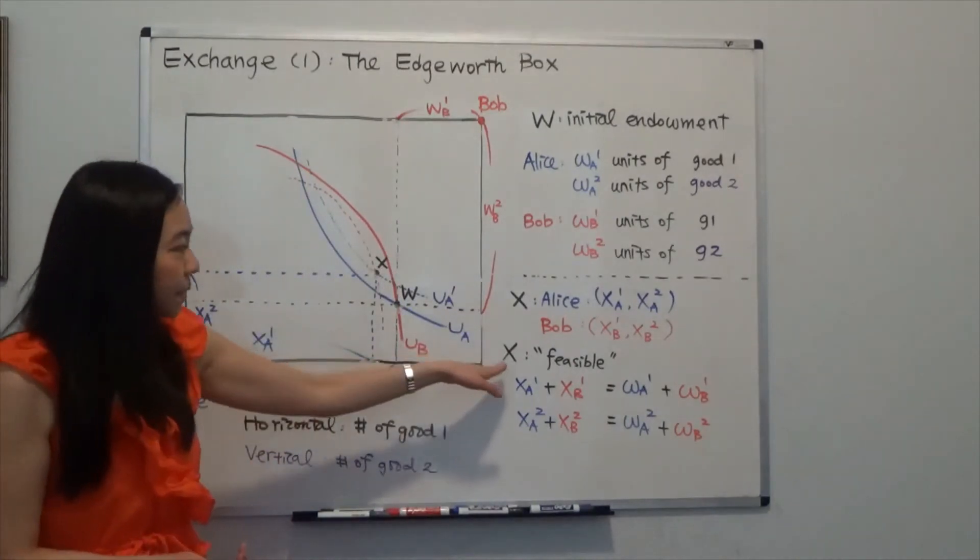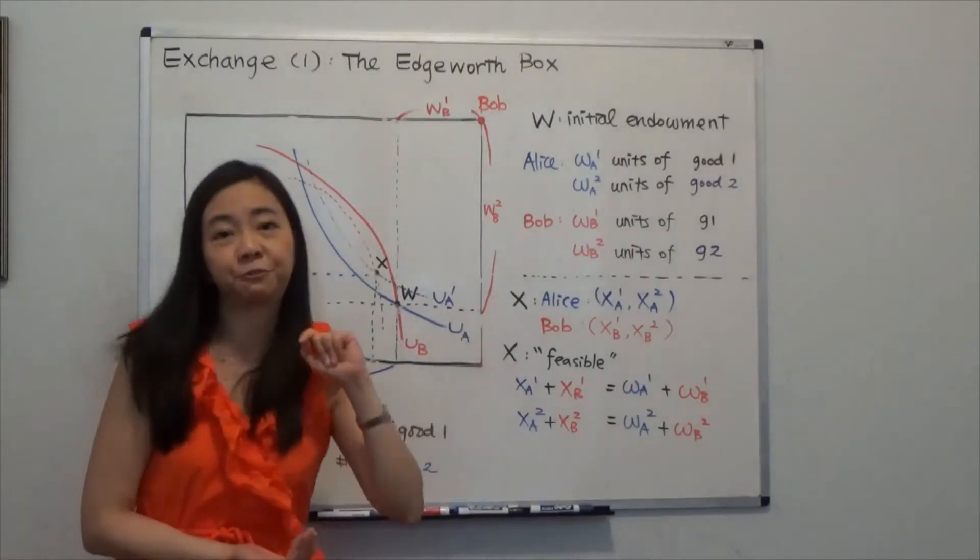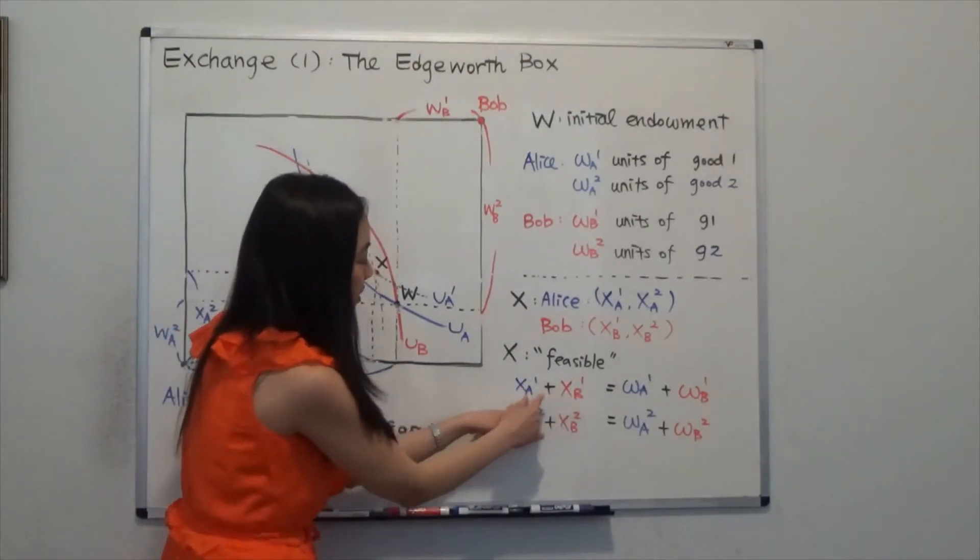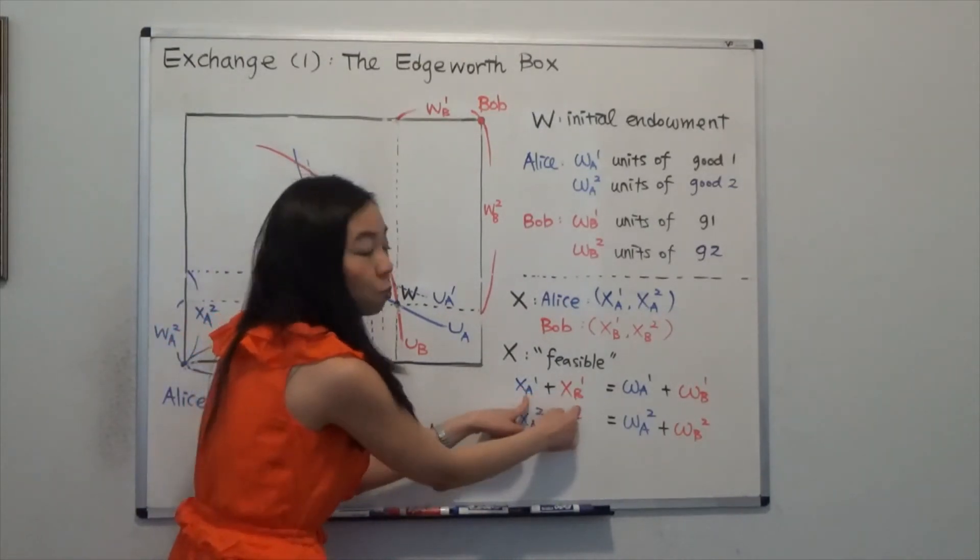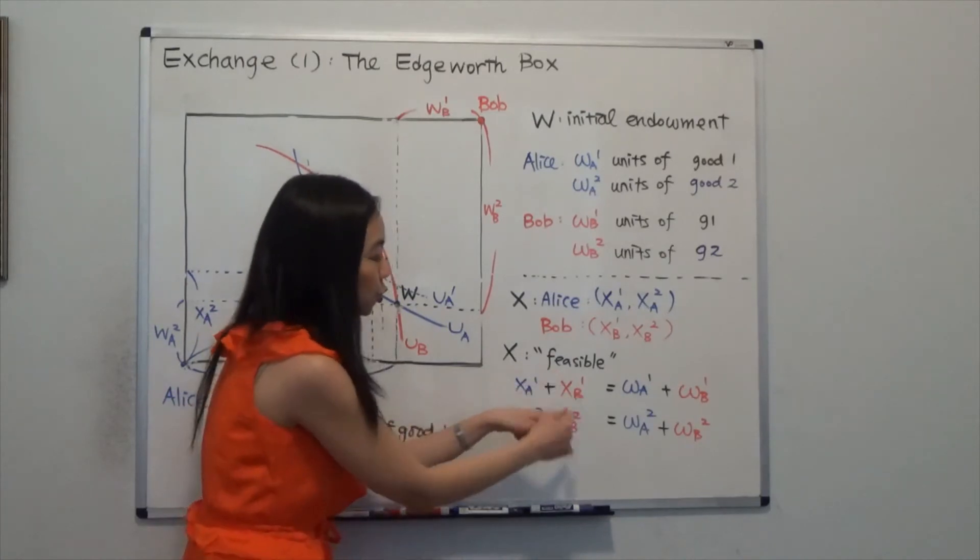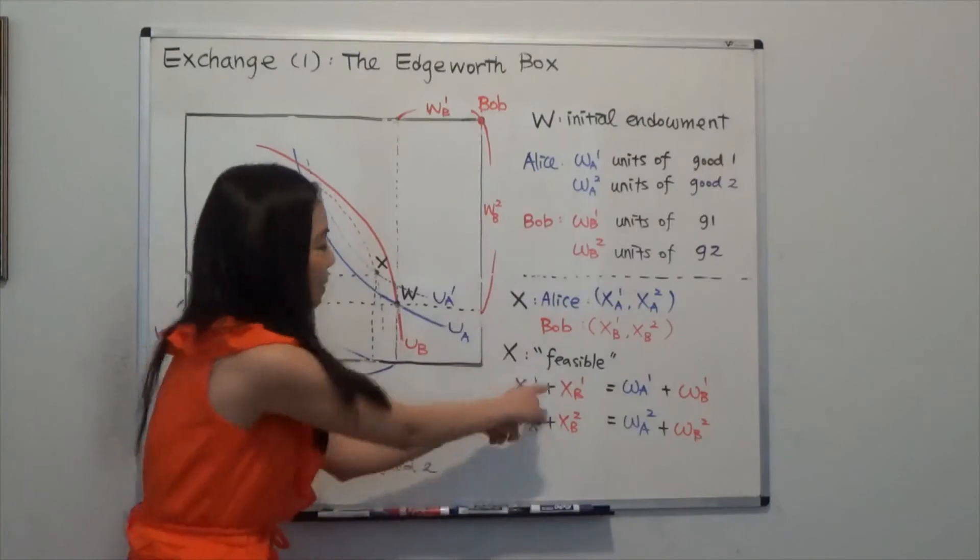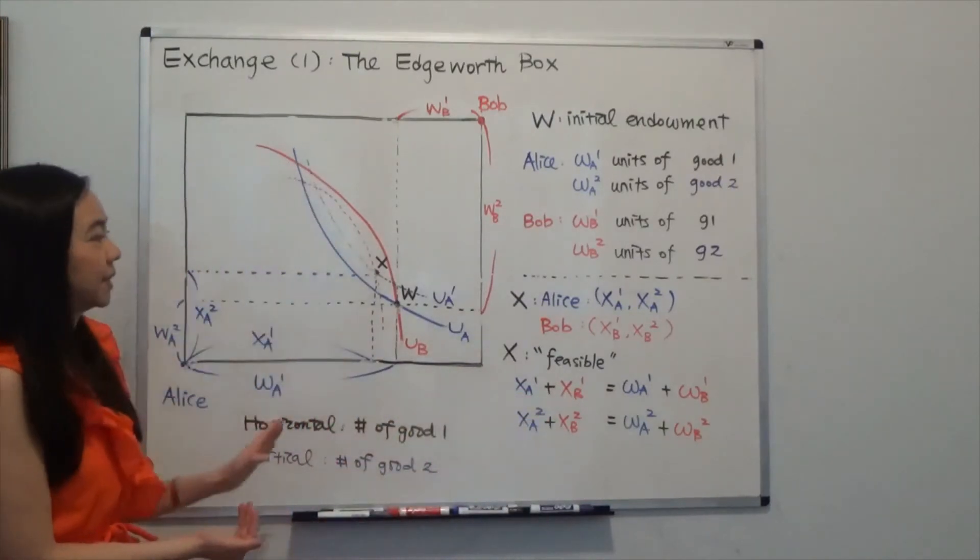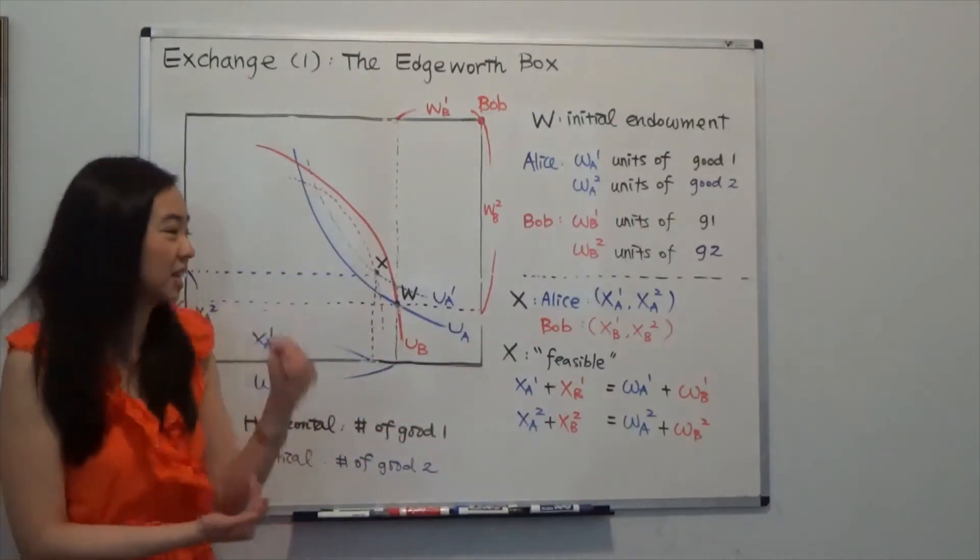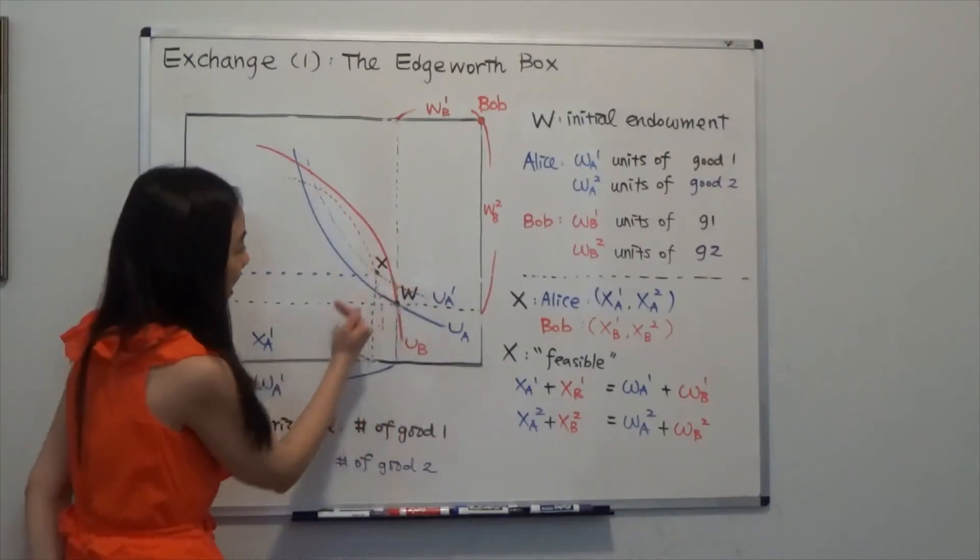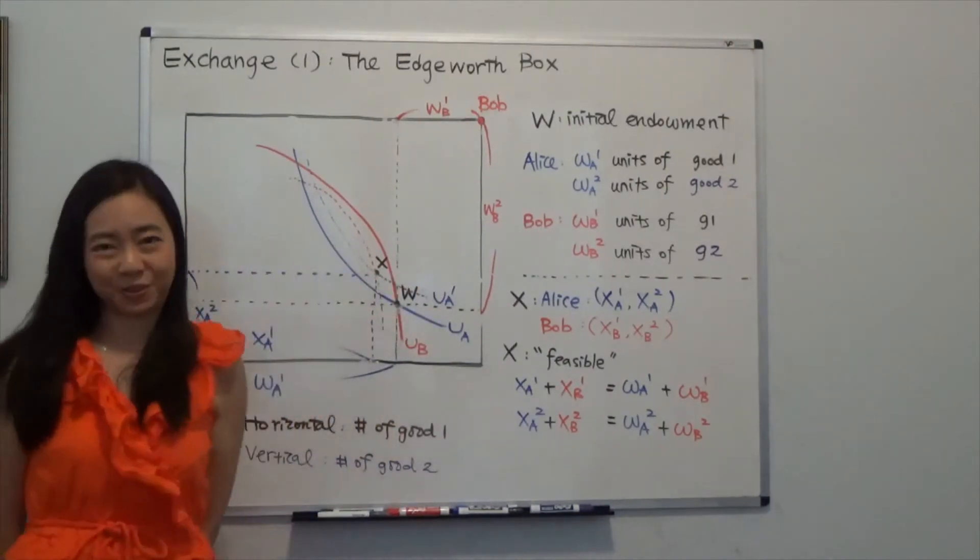And we say bundle X is feasible as long as the final consumption of Alice and Bob for Good 1 will sum up to the initial endowment of Good 1 for both Alice and Bob. Same for Good 2. So this is how Alice and Bob can improve their utility. And not just Alice, but both Bob and Alice have improved their utility level.